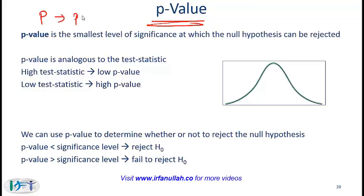P stands for probability. The p-value is the smallest level of significance at which the null hypothesis can be rejected. Is the level of significance also a probability? It is, because it's either 0.1 or 0.05 or 0.025, so it's also a probability.